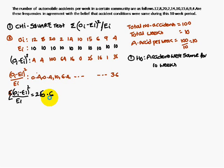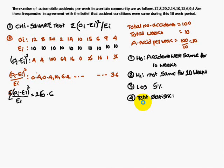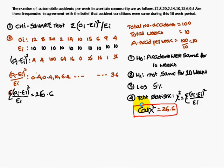Now we conclude whether accident conditions were the same or not. H₀: accident conditions were the same for 10 weeks. H₁: not the same for 10 weeks. Level of significance is 5%. The test statistic is the chi-square test, and the calculated chi-square value is 26.6.